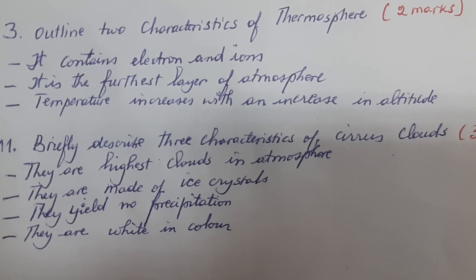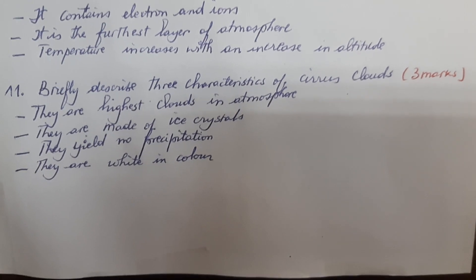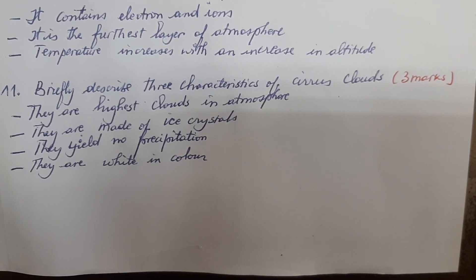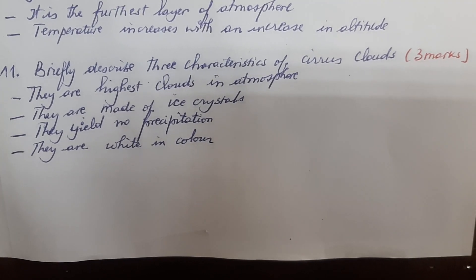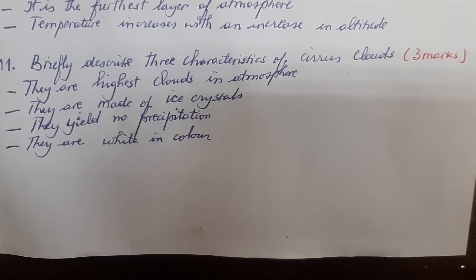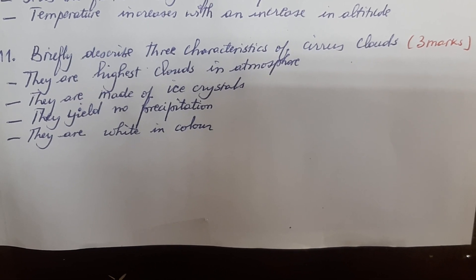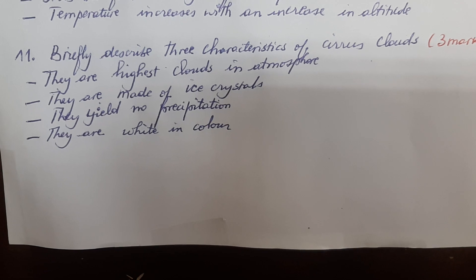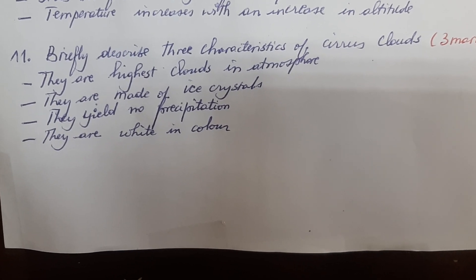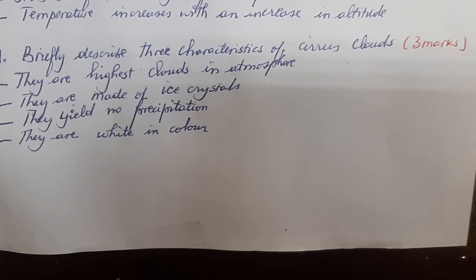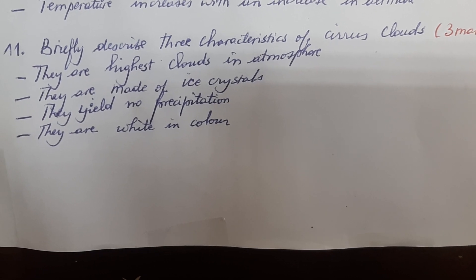Question eleven asks: briefly describe three characteristics of cirrus clouds. This question has three marks, one mark per characteristic. Characteristic number one: they are the highest clouds in the atmosphere. Characteristic number two: they are made of ice crystals. Characteristic number three: they yield no precipitation, meaning that cirrus clouds do not provide rainfall.